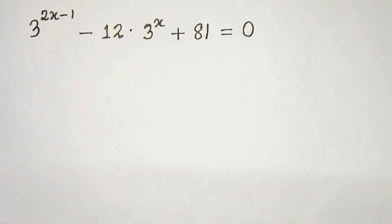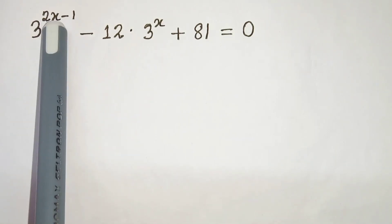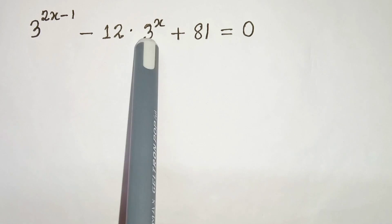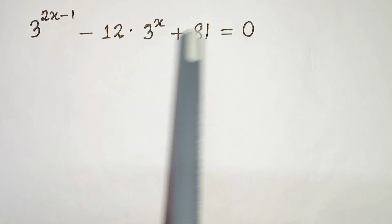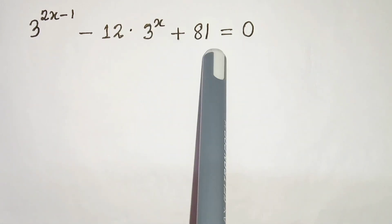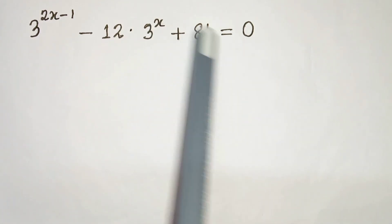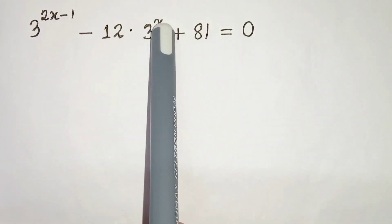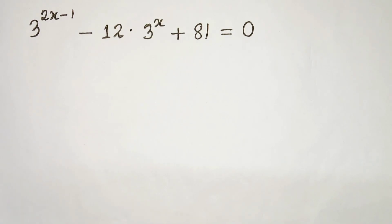Hello everyone. In this video we have 3 to the power of 2x minus 1, minus 12 times 3 to the power of x, plus 81 equals to 0. We have to solve this and find the value of x. So let's start.